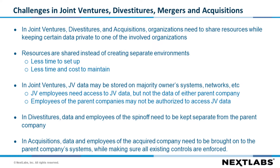In joint ventures, data may be stored on the majority owner's systems and networks, while access to the data of both the parent company as well as the joint venture is restricted. In divestitures, data and employees of the spin-off may need to be kept separate from the parent company before they have been fully migrated to the new systems. And finally in acquisitions, data and employees of the acquired company may need to be brought onto the systems of the new parent company while making sure that all existing controls continue to be enforced. In all of these cases, data needs to be segregated even though it is all housed on the same system.